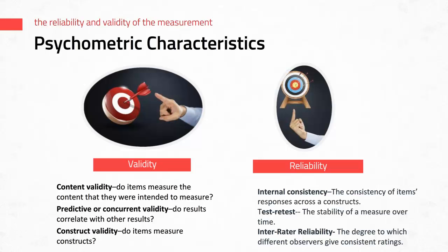Next, there is construct validity — do items measure constructs? This is usually established through something such as a factor analysis or principal component analysis. Usually, what you'll find is that an instrument has a validation study published either in a journal or some other format.